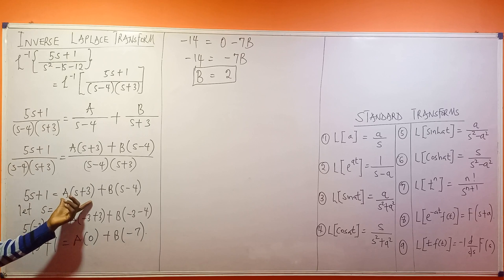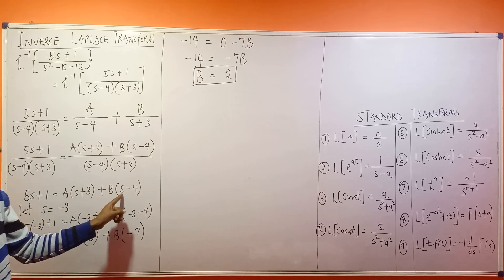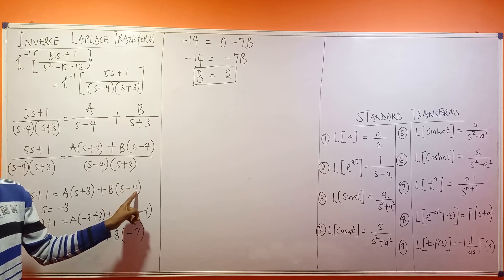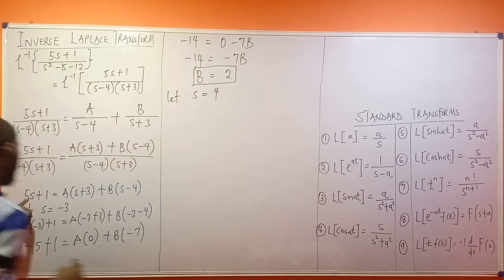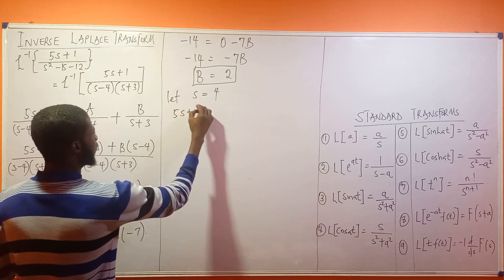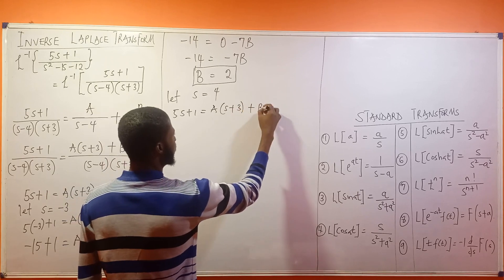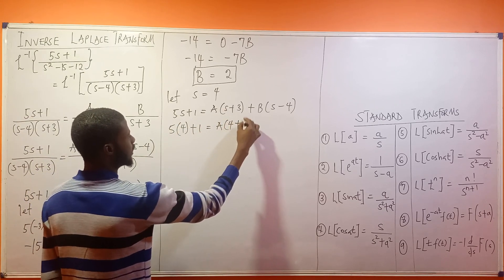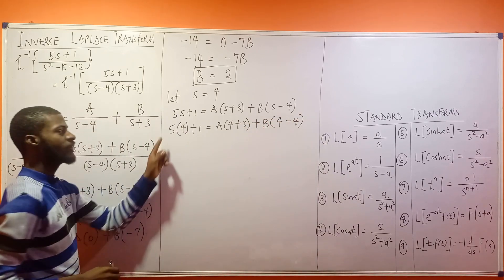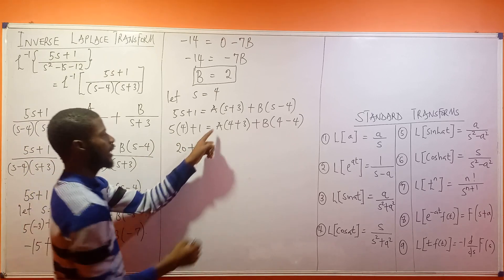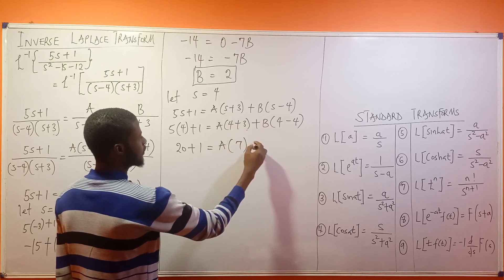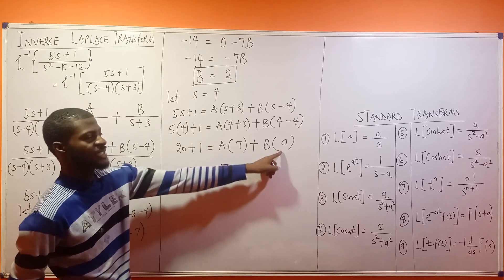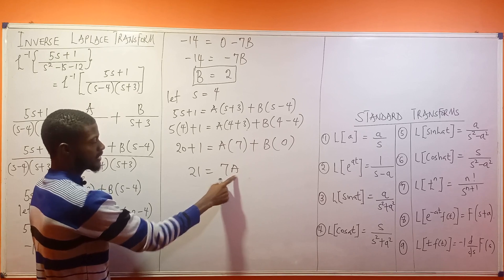Now we solve for A by making the B side zero. For (s - 4) = 0, we need s = 4. Substituting: 5(4) + 1 = A(4 + 3) + B(4 - 4), which gives 20 + 1 = A(7) + B(0), so 21 = 7A. Dividing both sides by 7, we get A = 3.